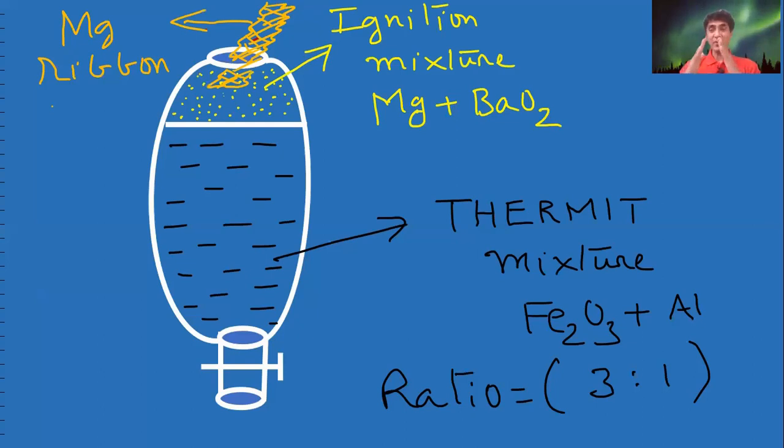Just like a fire pot used in the Diwali crackers. When fire pot is taken and ignited, it gives flowers like that. Ignition mixture is taken, ignited, and reaction takes place in the thermite mixture.